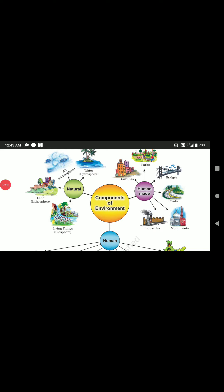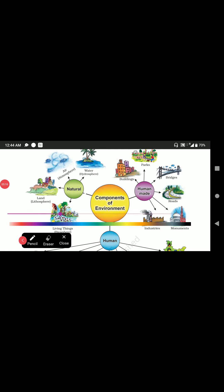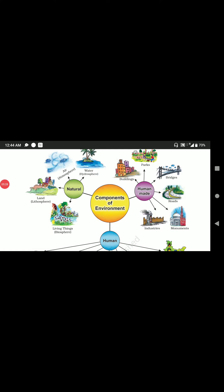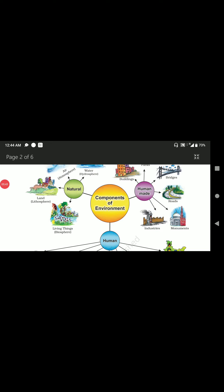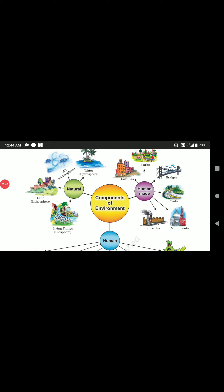The next topic is the components of environment. There are three components: nature, human-made, and humans. Natural refers to what is created by nature — water, air, land, and living things. In geography, we use the terms hydrosphere for water, atmosphere for air, lithosphere for land, and biosphere for living things. We will study these in detail in this chapter.